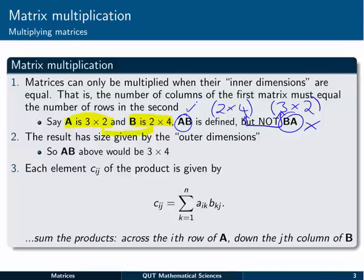Now given that we have the inner dimensions correct, we can move on to part 2. The result of multiplying two matrices will have a size given by the outer dimensions. So where we had A equal to 3 by 2 and B a 2 by 4 matrix, the outer dimensions, 3 and 4, give us the size of the result AB. That's kind of useful, so you know what you're looking for.